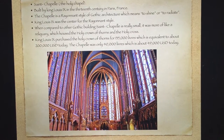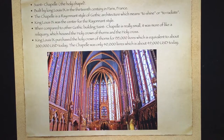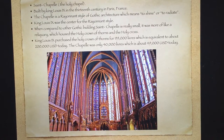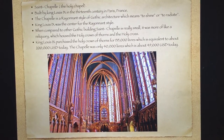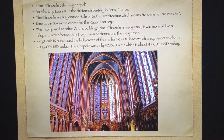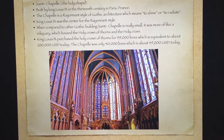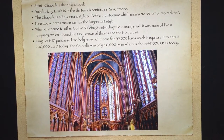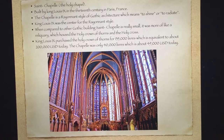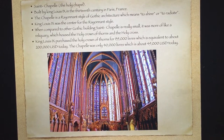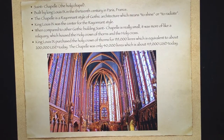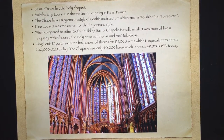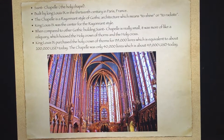Saint Chapel, the Holy Chapel, was built by King Louis IX in the 13th century in Paris, France. The chapel is a rayonnant style of Gothic architecture, which means to shine or to radiate, and King Louis IX was a center for the rayonnant style. When compared to other Gothic buildings, Saint Chapel is really small — it was more of a reliquary, which housed the Holy Crown of Thorns and the Holy Cross. King Louis IX purchased the Holy Crown of Thorns for 135,000 livres, equivalent to about $200,000 US dollars today. The chapel itself was only 40,000 livres, about $49,000 US dollars today.